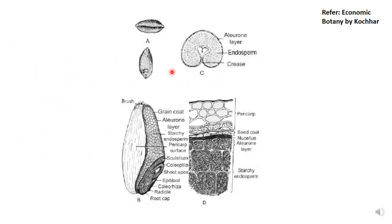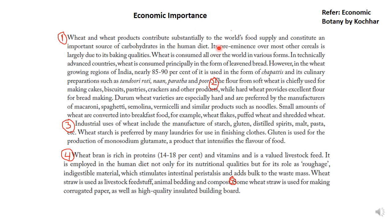These are close-up views of the dorsal side of the grain, ventral side of the grain, transverse section of the grain, longitudinal section of the grain, and different parts of the pericarp and seed coat. Please refer to Economic Botany by Kochar for all the food plants we have discussed so far — it is a very good book. Now let us look at the economic importance of wheat.